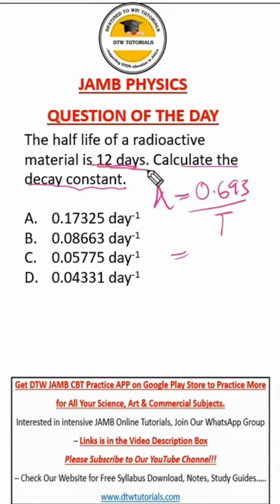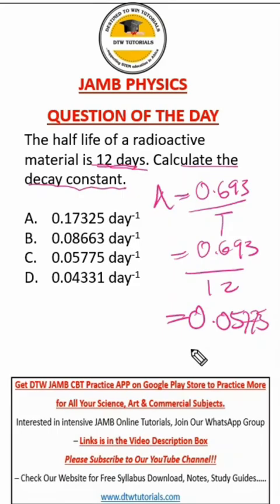And they've told us that half-life is what? 12 days. So it is just 0.693 over 12. And with this, you can easily use your calculator during your JAMB exam. Just at the top bar, you'll see calculator. Click on it and quickly do this. And you're going to get 0.05775. And our right option here is option C.